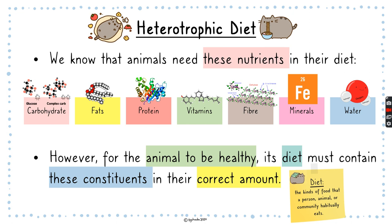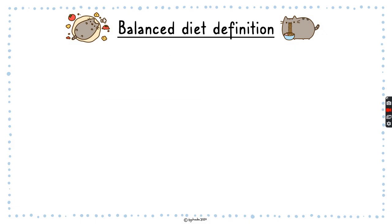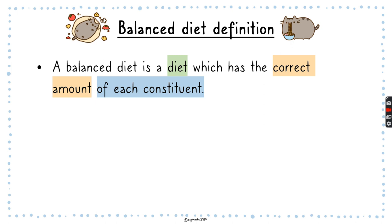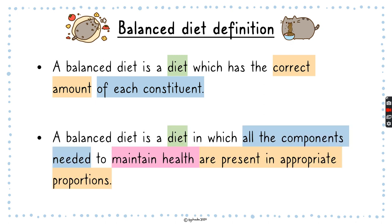Diet is the kind of food that a person, animal, or community habitually eats — how much and what you actually eat. For the diet to be balanced and healthy, you need the correct amount of everything. A balanced diet is a diet that has the correct amount of each constituent, or: a diet in which all the components needed to maintain health are present in appropriate proportions.